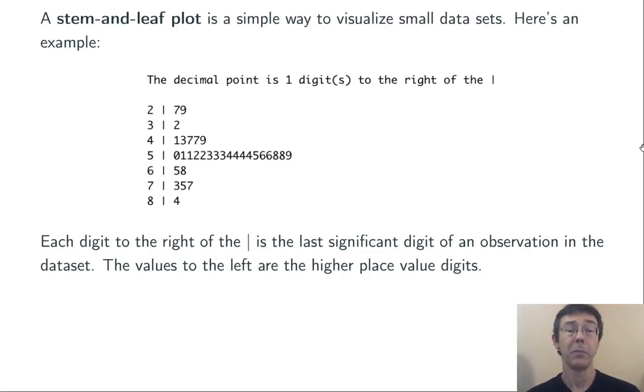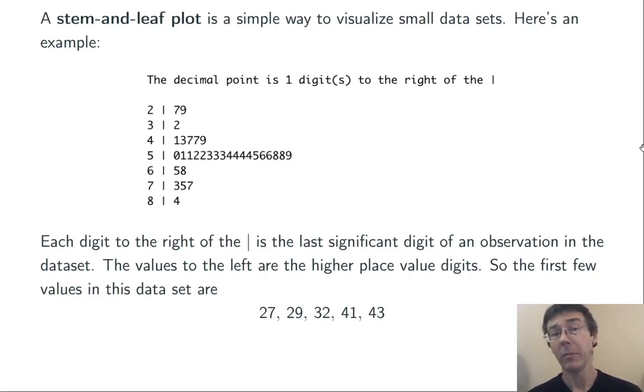Here's a typical stem plot. Each digit to the right of that vertical bar is representing a data point. In particular, each one of those digits is the last significant digit of an observation in the data set, and then the values to the left of that upward bar are the higher place value digits. So for example, the first few values in this distribution are 27, 29, and 32.